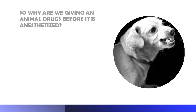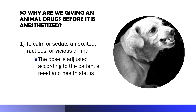Why do we give a pre-anesthetic agent to an animal before it will be anesthetized? The first reason is we intend to calm or sedate an excited, fractious, or vicious animal. Of course, when we do this, we also consider the needs of that particular patient in terms of dose as well as the health status of the animal.